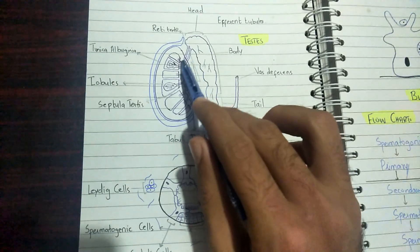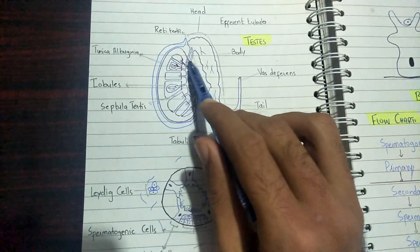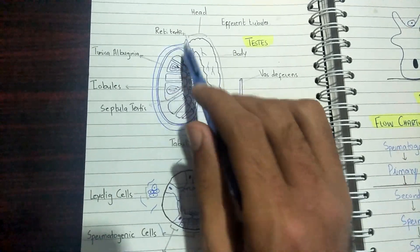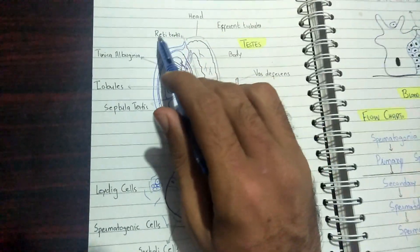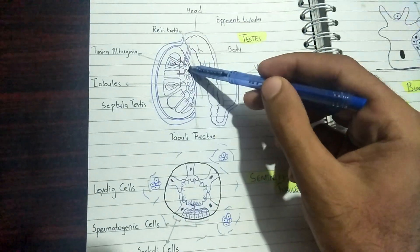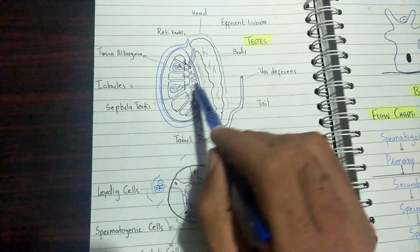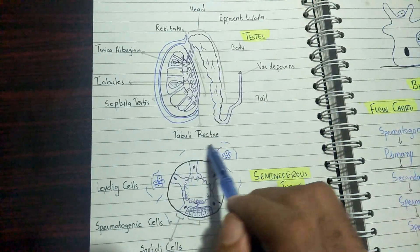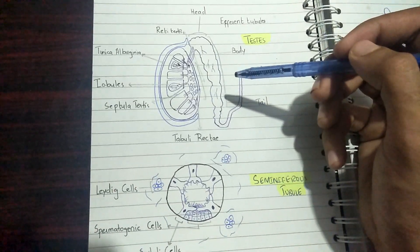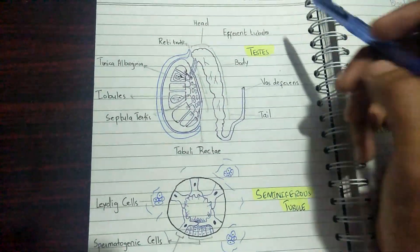The straight tubules connect the seminiferous tubules in each lobule to a network-like structure. The word 'rete' means network, and thus this structure is labeled as rete testis. The straight tubules connecting the seminiferous tubules to the rete testis are known as tubuli recti.